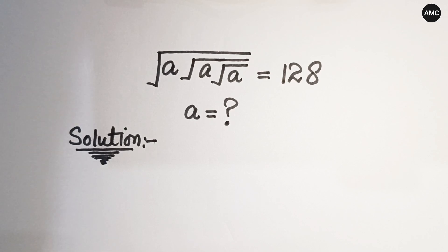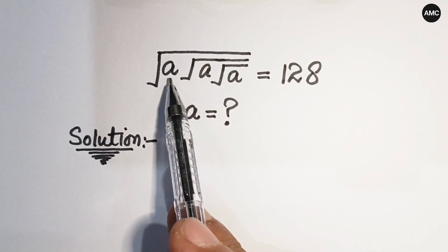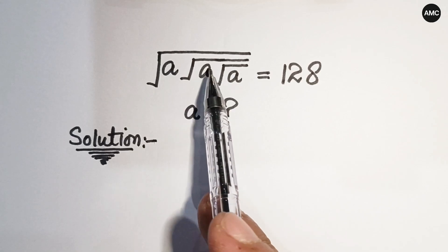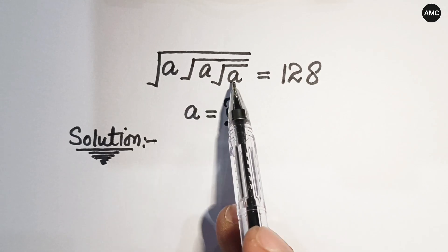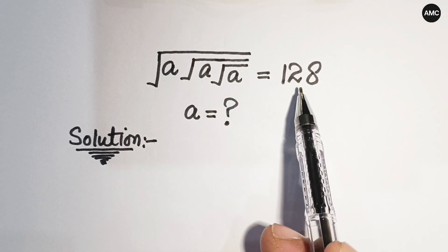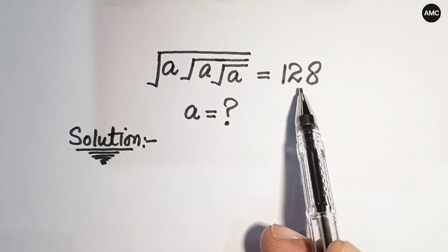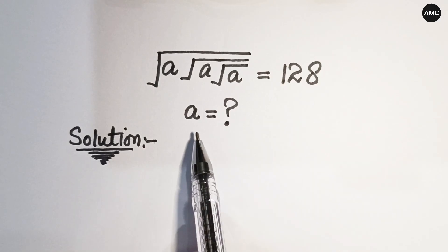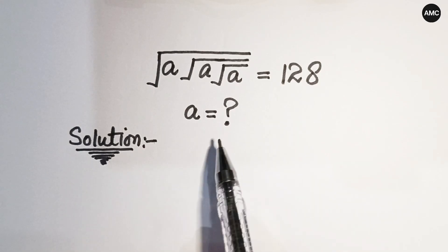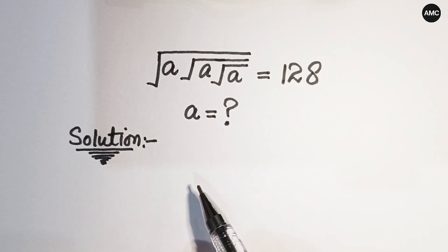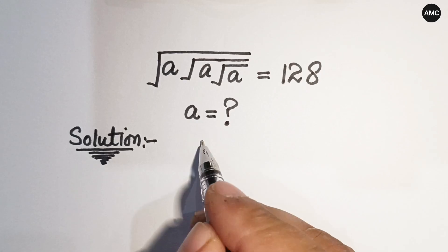Hello everyone, welcome back to A Min Mass Club. I hope you are doing well. Today we have a nice radical problem: square root of a times square root of a times square root of a is equal to 128. We have to find the value of a, and we have two different methods.